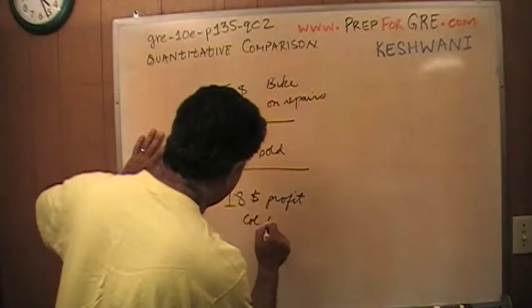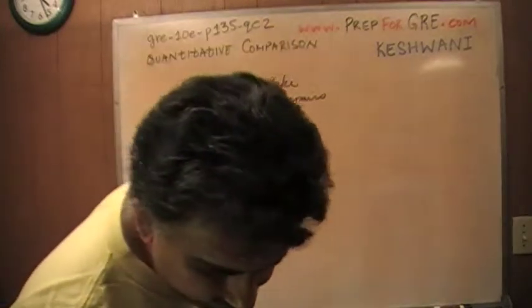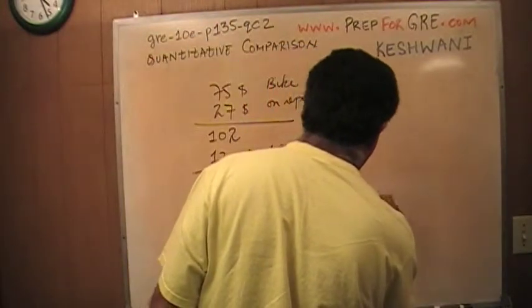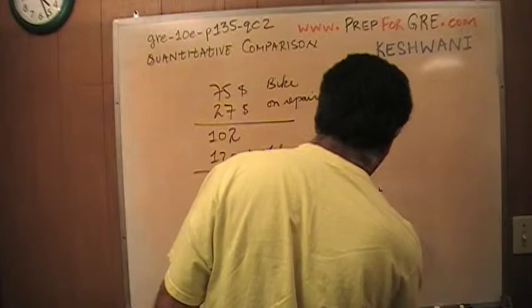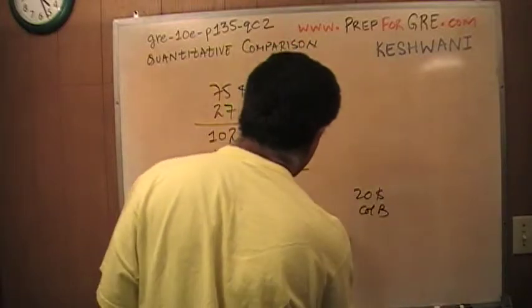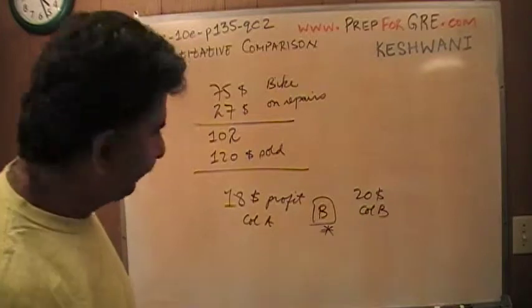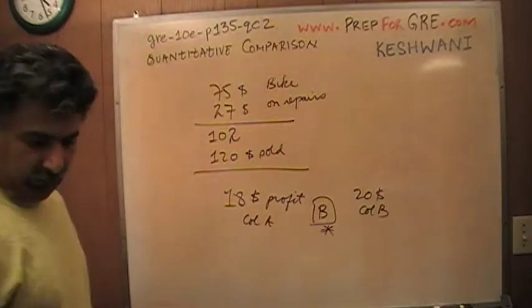And this is our column A. In column B we have $20. So B is the answer. Column B is bigger. That's all.